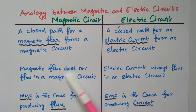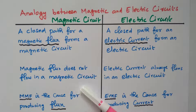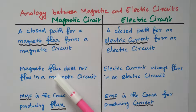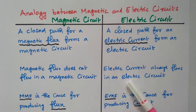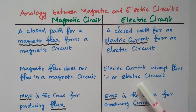The magnetic flux does not actually flow in a magnetic circuit — we assume there is a magnetic flux flowing through the core, but it is imaginary. In the electric circuit, however, there is a real flow of electric current.